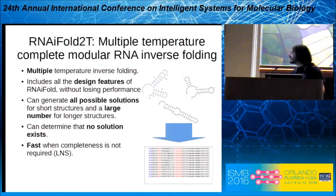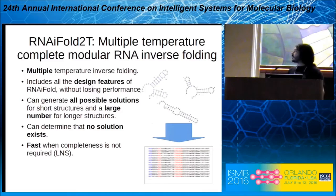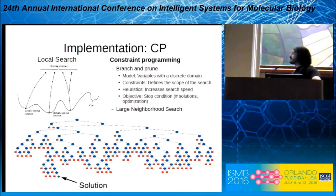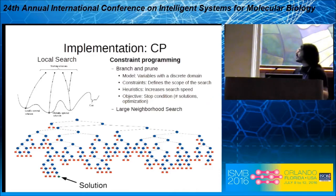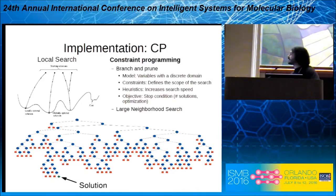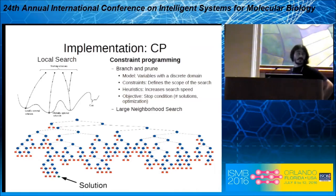RNA fold2T is not limited to two structures — you can specify any number of temperatures or structures, and it includes all the design features of RNAfold without losing performance. It can generate all possible solutions. Constraint programming differs from local search: local search minimizes a specific cost function with a small search, whereas constraint programming performs an exhaustive search across the space. It has four characteristics that determine efficiency: the model that determines the tree, the constraints that specify when the tree is pruned, the heuristic that determines the traversal order, and the objective that determines when to stop.